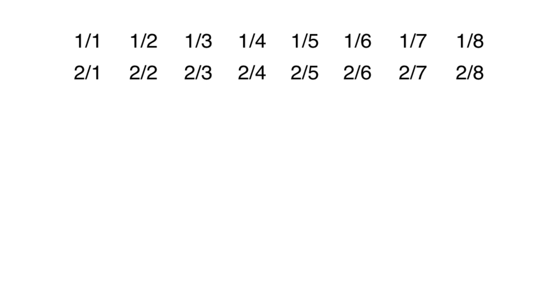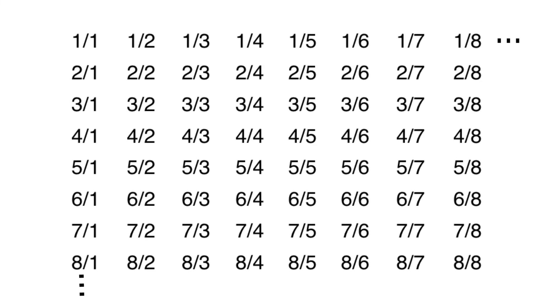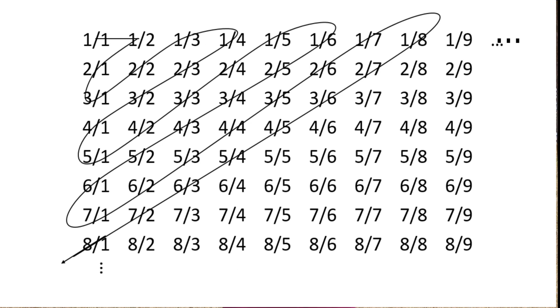In the next row, the fractions have 2 in the numerator, and start from 2/1, then 2/2, 2/3, and so on. This pattern continues infinitely. However, if we listed the numbers along the rows, the rows would go on infinitely, and we would never reach the next row. So instead we list them diagonally. Every single fraction will appear somewhere on one of these diagonal lines.